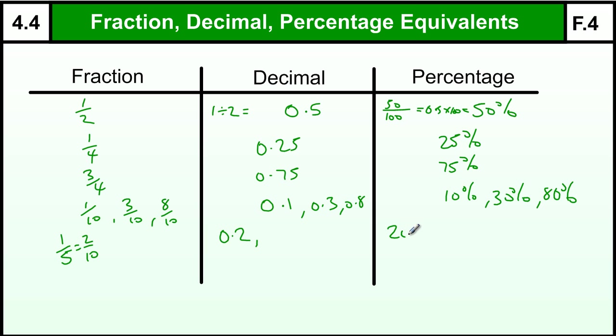And that's 20%. If you imagine a little zero on the end there, you would see the connection between 0.2 and 20%. Three fifths, for example, would be 6 over 10, or 0.6, or 60%.